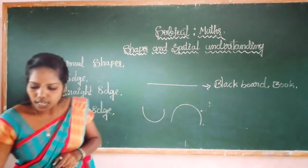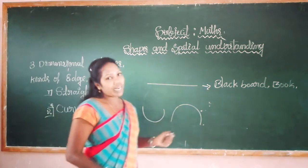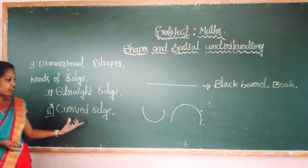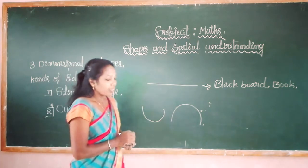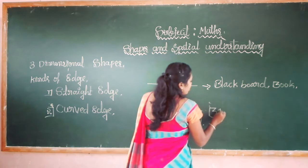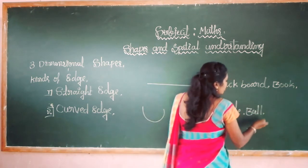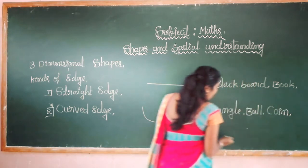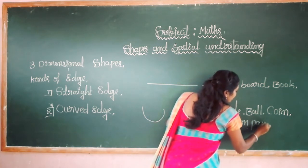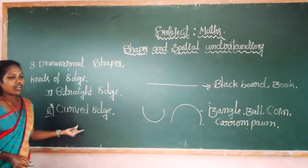Ok dear students, let's go to the next one — curved edge. Give more examples for the curved edge. Which are the curved edge objects? First one is bangle, then ball, also coin, and caravan. These are examples for the curved edge.